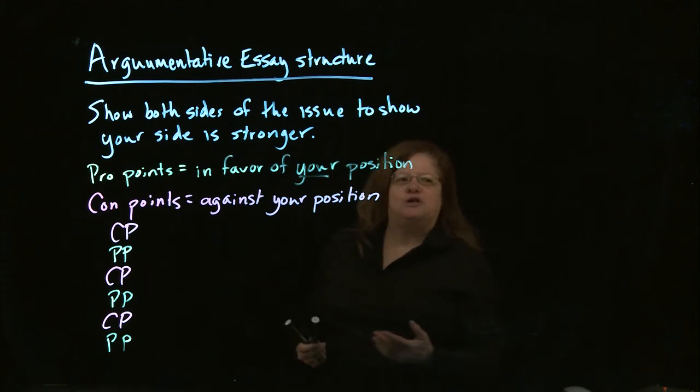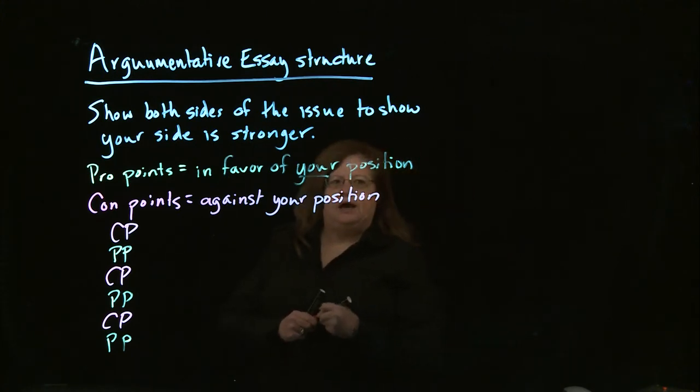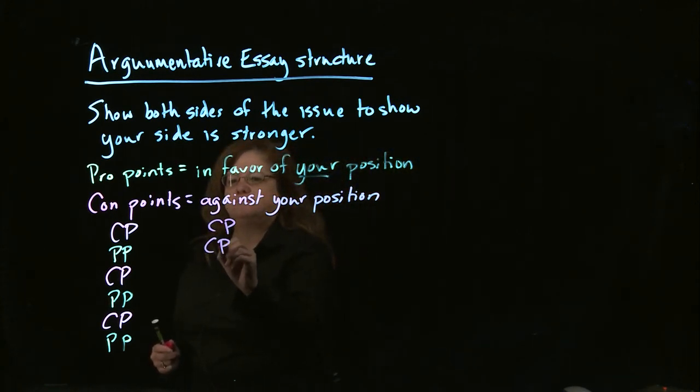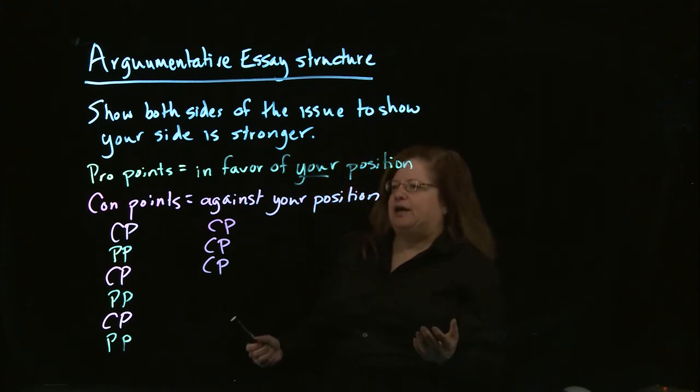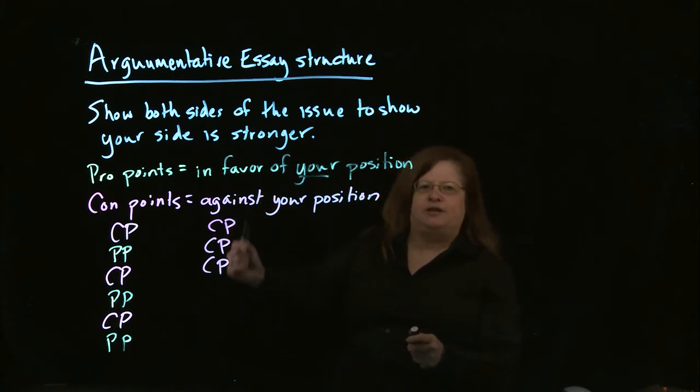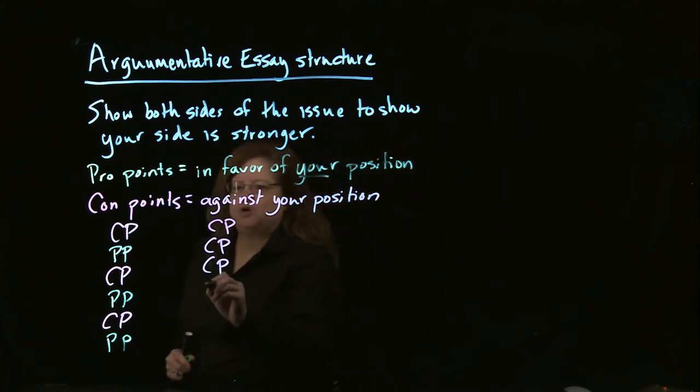The other pattern of organization I like to call the big piles pattern. And that's where you start with a big pile of con points, and then you have a gigantic but or however or on the other hand, some kind of really strong transition to let the reader know what you're doing, and then you have a big pile of pro points.